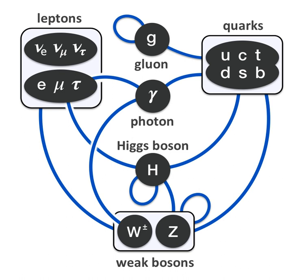The Higgs boson plays a unique role in the Standard Model by explaining why other elementary particles, except the photon and gluon, are massive — in particular, why the photon has no mass while the W and Z bosons are very heavy. In electroweak theory, the Higgs boson generates the masses of the leptons and quarks. Because the Higgs boson is massive and decays almost immediately when created, only a very high-energy particle accelerator can observe it. Experiments to confirm the Higgs boson using the Large Hadron Collider at CERN began in early 2010, and were also performed at Fermilab's Tevatron until its closure in late 2011.